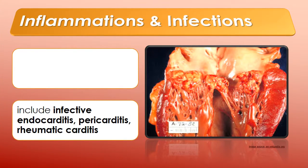Your textbook also covers infective endocarditis, listed under inflammations and infections affecting the heart. Infective endocarditis is a microbial infection involving the endocardium, usually caused by streptococcus or staphylococcus bacteria. A positive blood culture is the prime diagnostic test, and echocardiography may also be done. Be familiar with the interventions listed in your textbook. Another infection to know is acute pericarditis, which is an inflammation or alteration of the pericardium that may be fibrous, serous, hemorrhagic, purulent, or neoplastic.